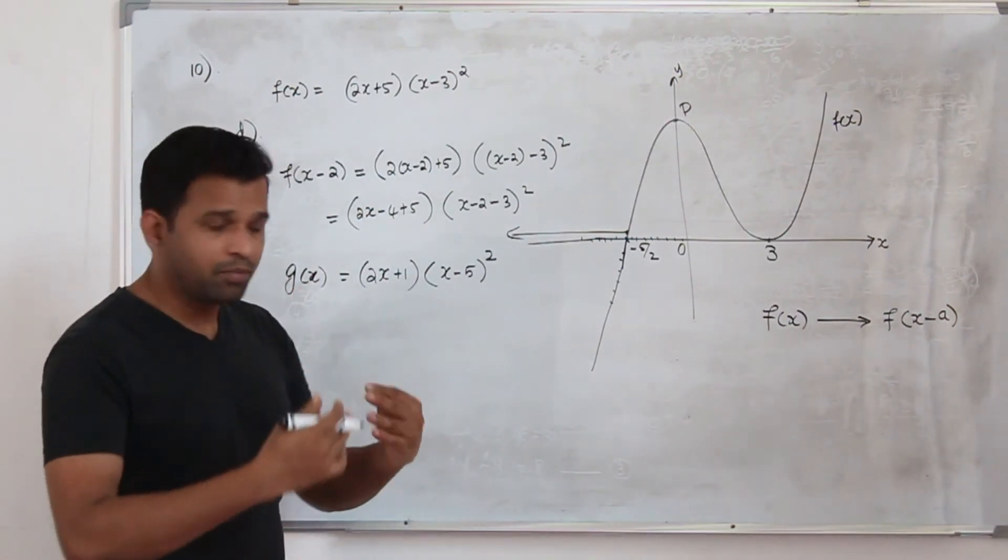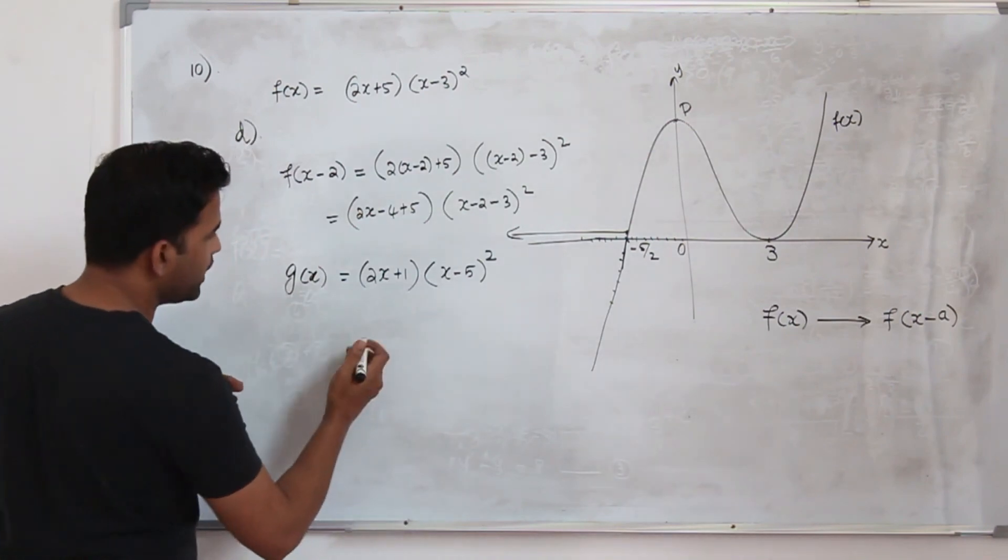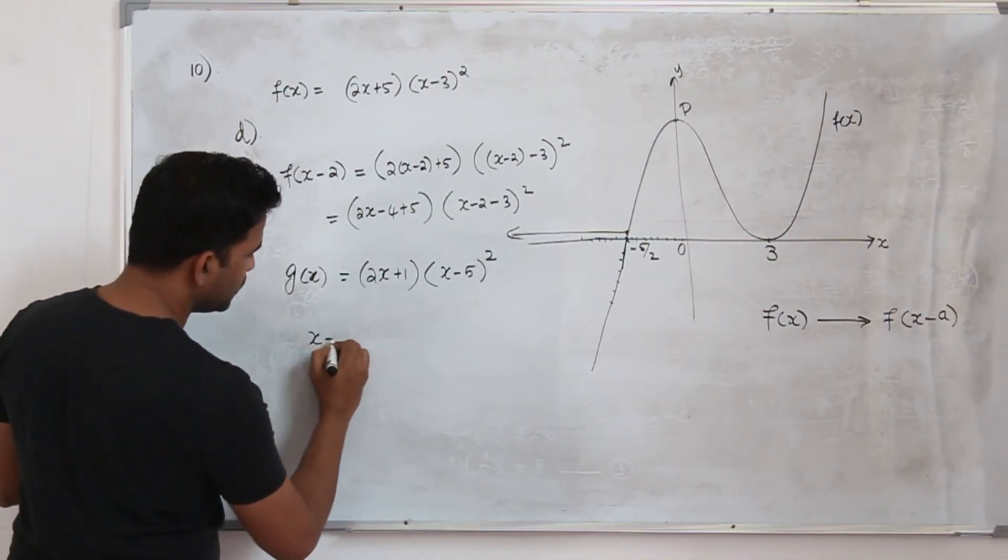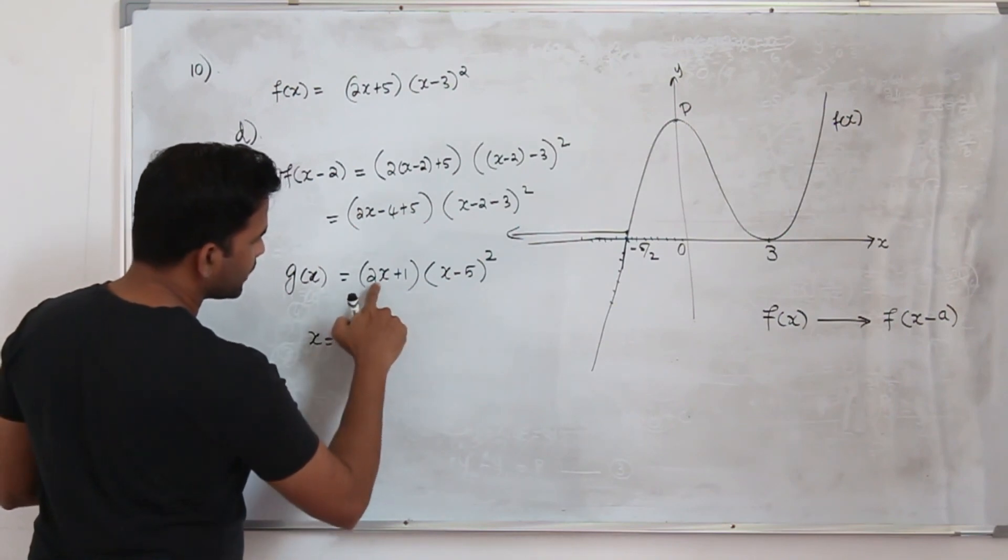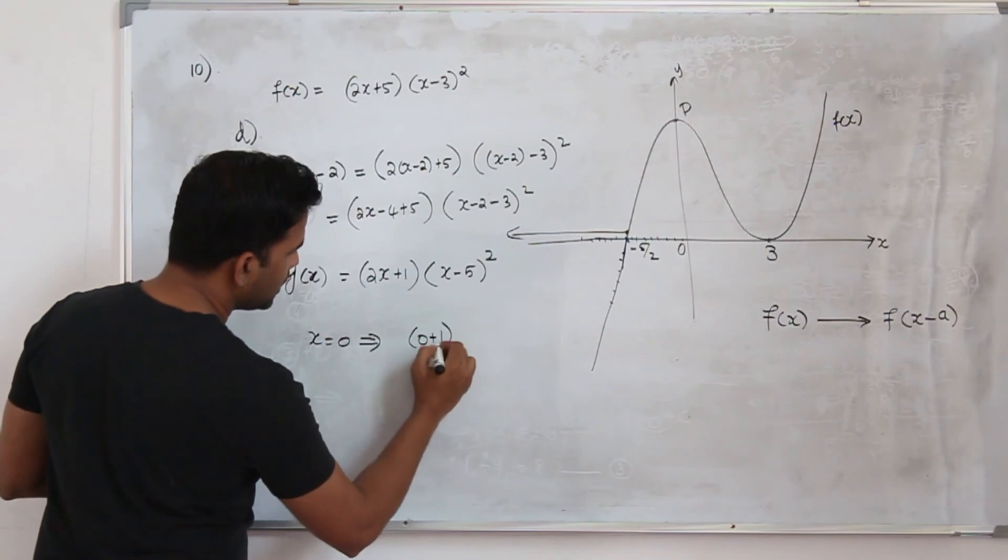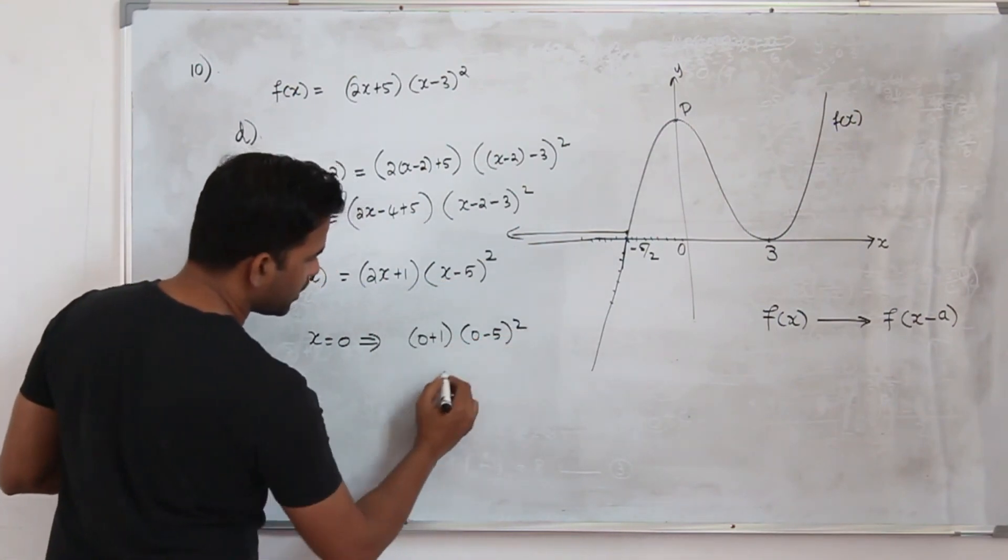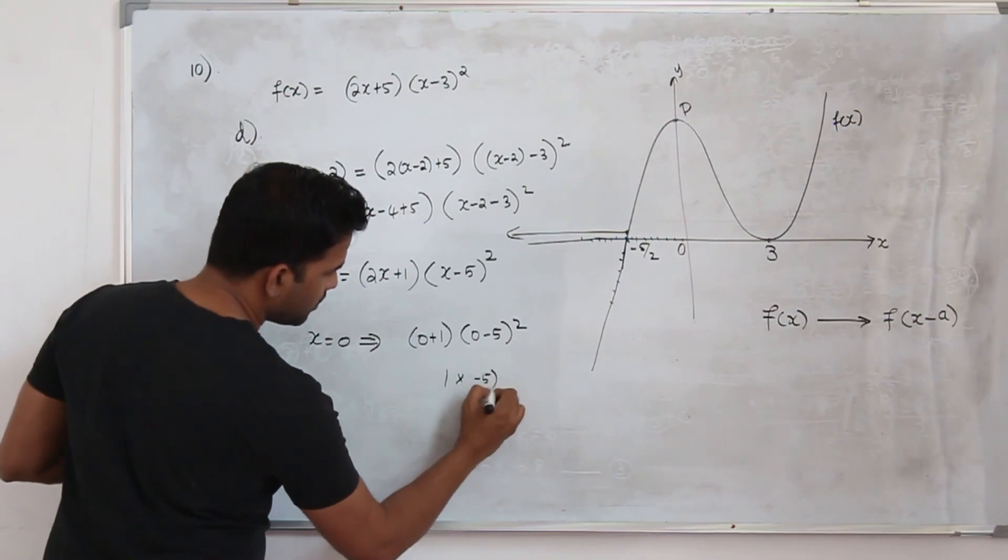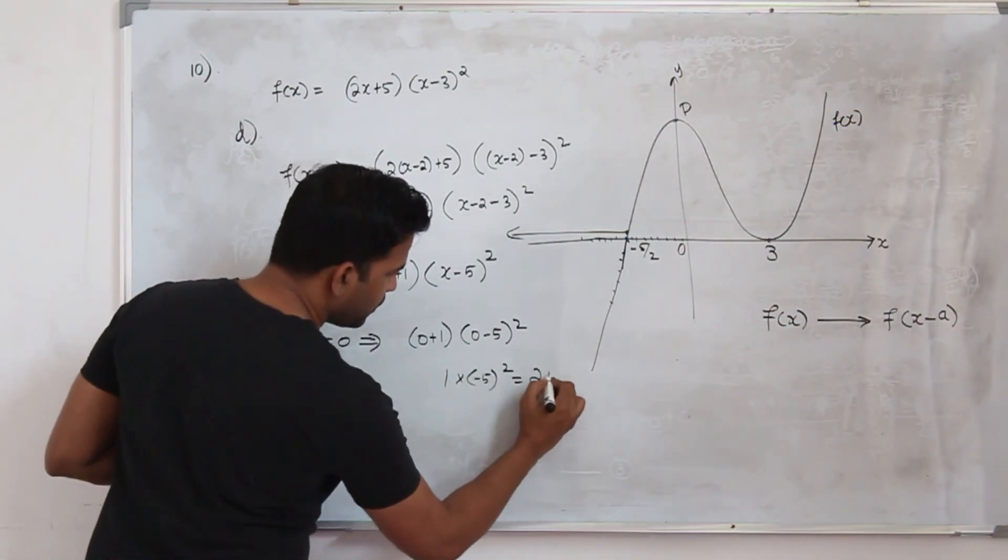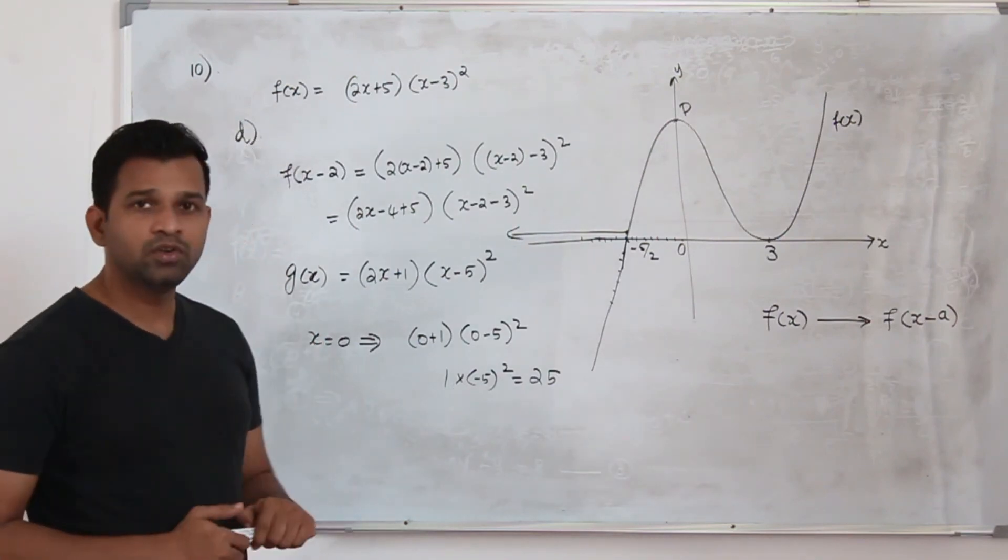That's our new function g(x). Now the second part they want you to find the y-intercept of g(x). How do we find the y-intercept? Replace x by 0. So when you replace x by 0 this will become 0. So you will have 0 plus 1. Here it will become 0 minus 5 whole square. Or 1 times minus 5 square is 25. That's the y-intercept of the new graph.